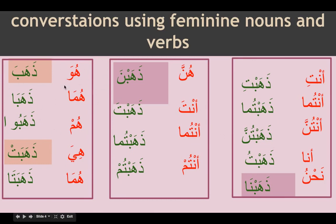Now we practice a verb to get comfortable identifying the fa'il and the fi'l. With the verb zahaba in its pure three-letter form, the fa'il is detached. We look for the fa'il in the sentence by finding the sign of marfu, which is damma. If we do not see it, we consider it mustatir, representing huwa. The same applies to zahabat.